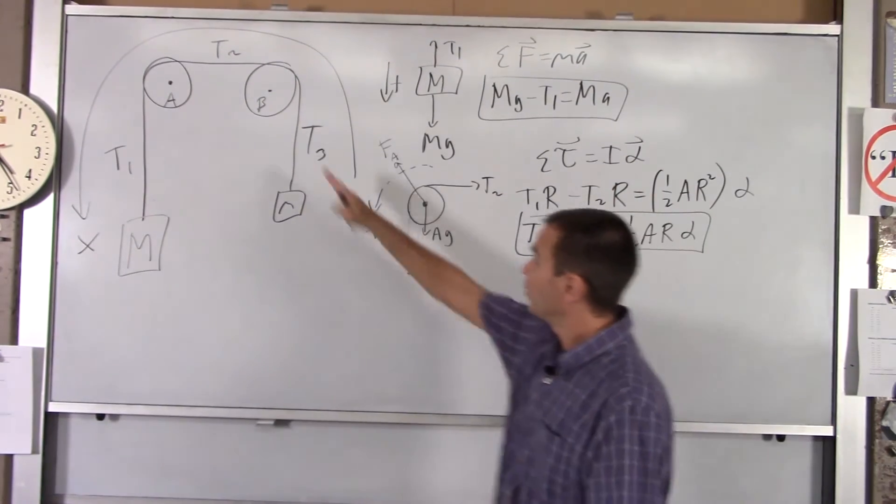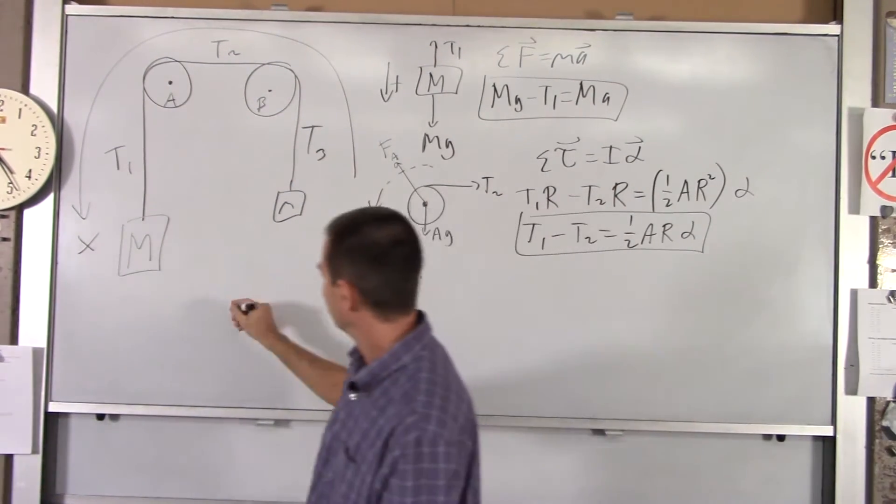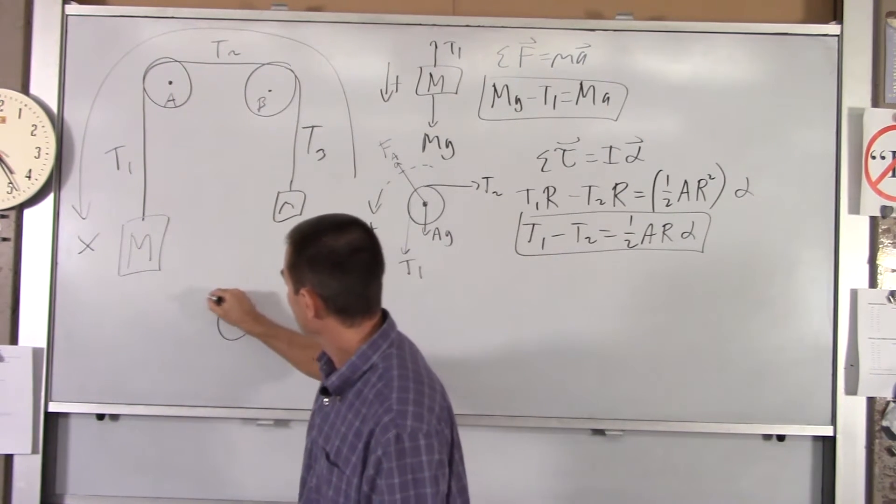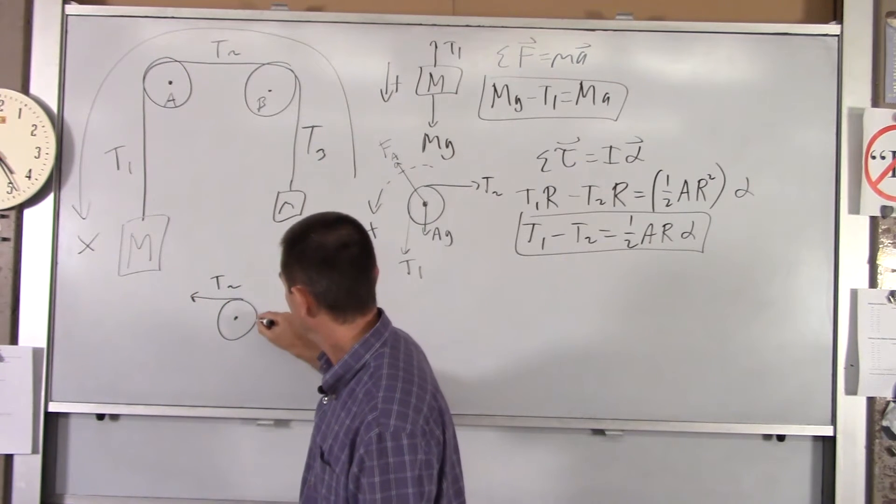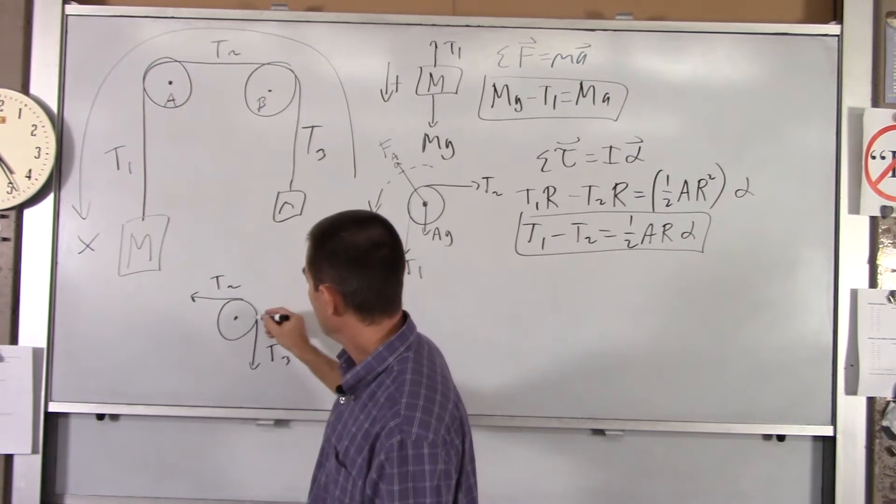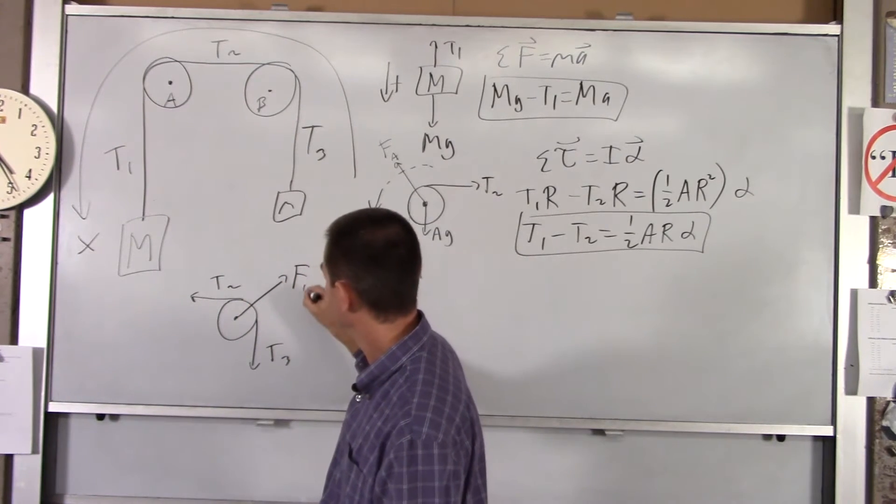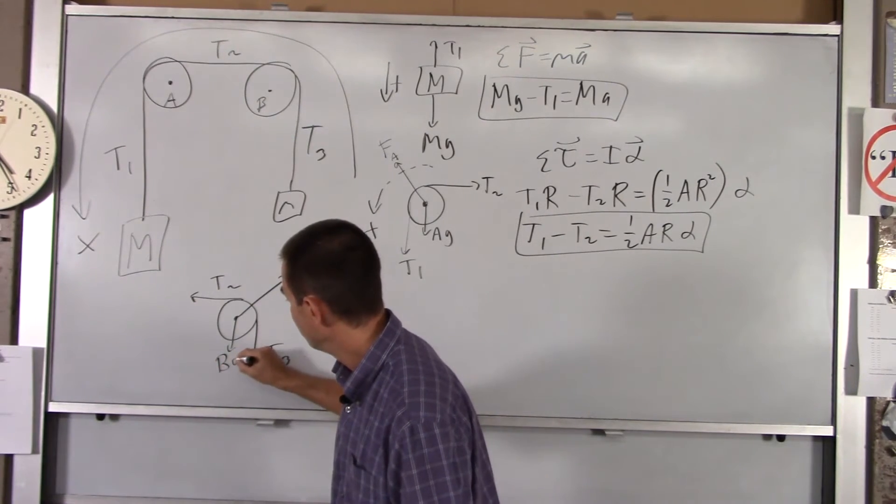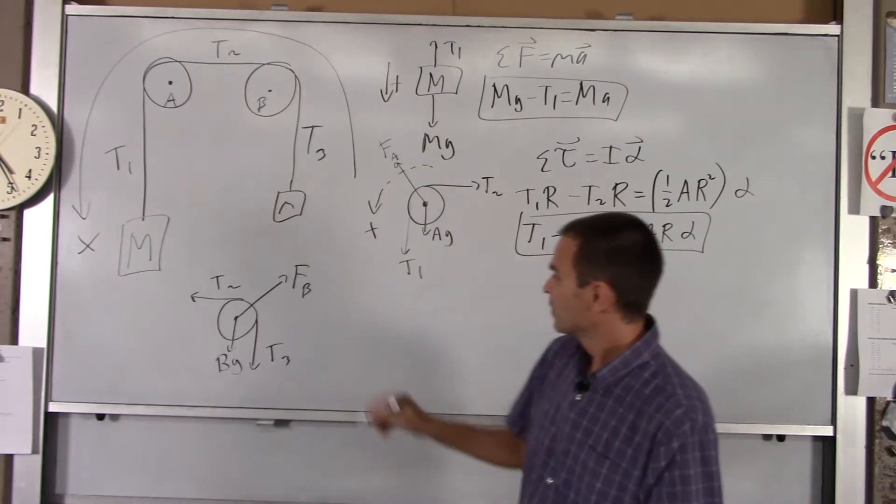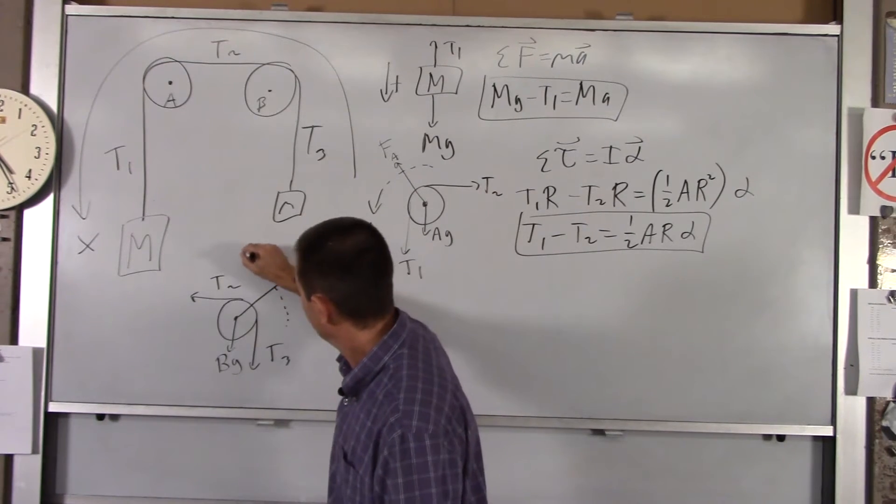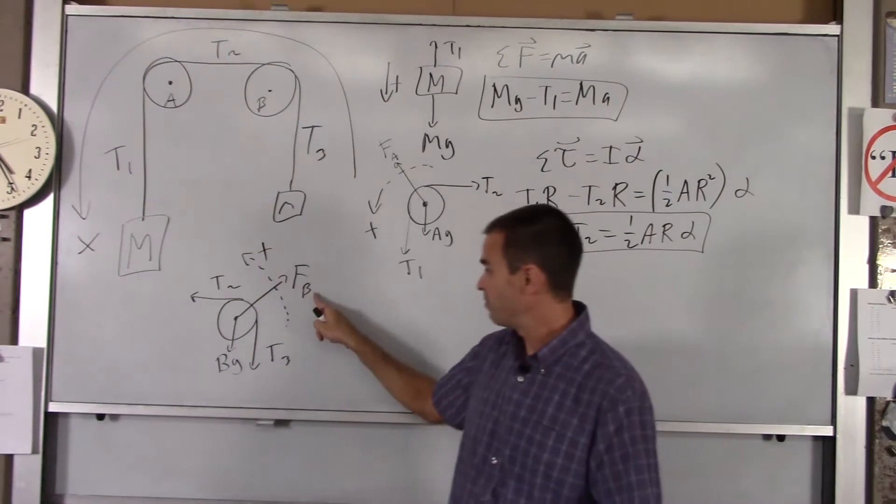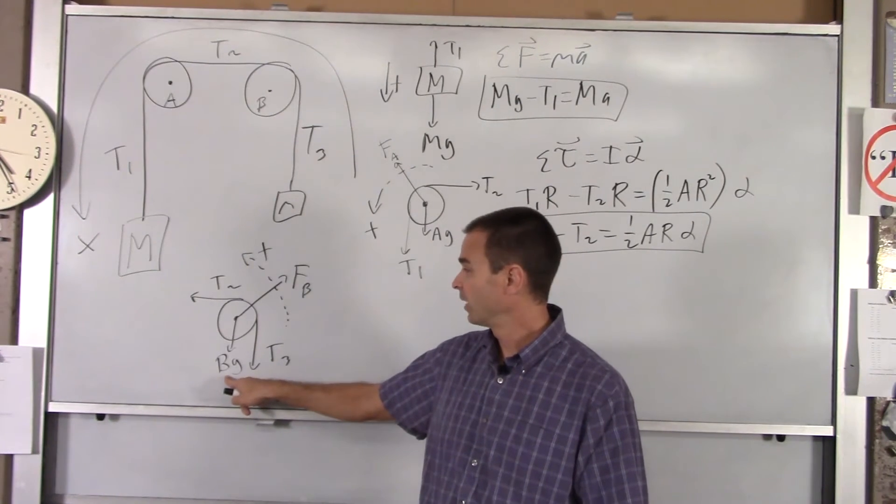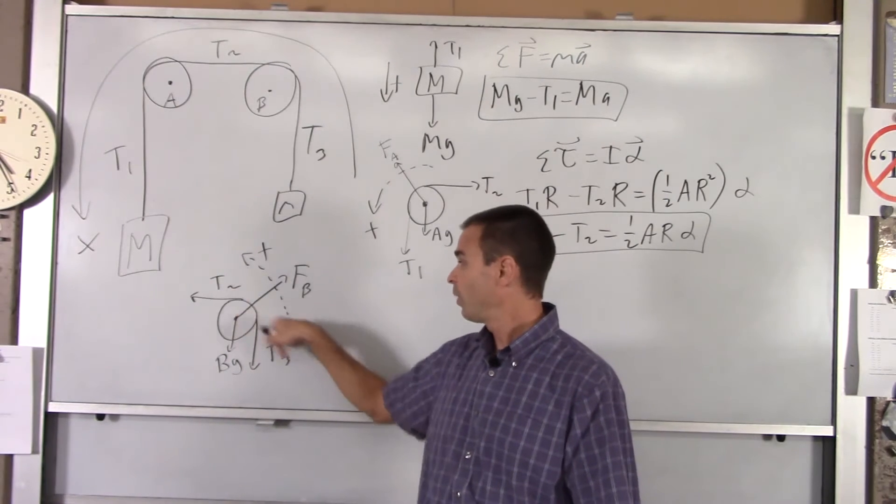If we keep going, now we'll do pulley B. You've got T2 acting to the left. You've got T3 acting down. You've got some support force here, FB. And then you've got the weight of the pulley, which is BG. Counterclockwise is positive. FB and BG cause no torque because they act through the center of the disk. They have no lever arm.